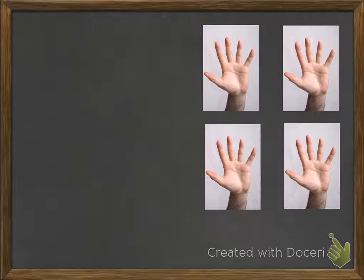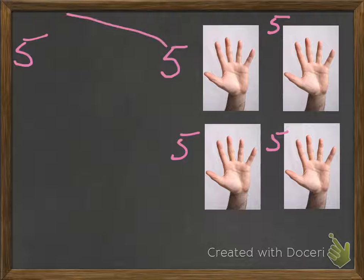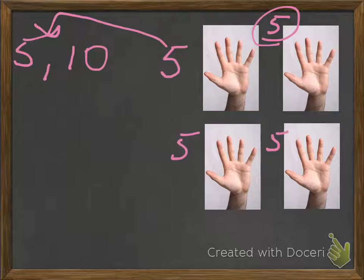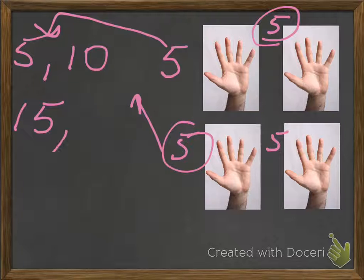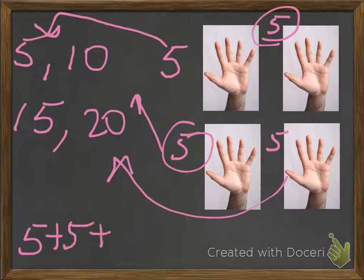Here we have four hands. It's pretty easy to see that if we counted each one, there's five here, five here, five here, five here. We can actually start making a pattern. This first one, we have five. Add this one — now it's five, ten. Five plus five is ten. Then we bring in the next one — now we've got fifteen. Bring this over, we've got twenty. Five plus five plus five plus five equals twenty.